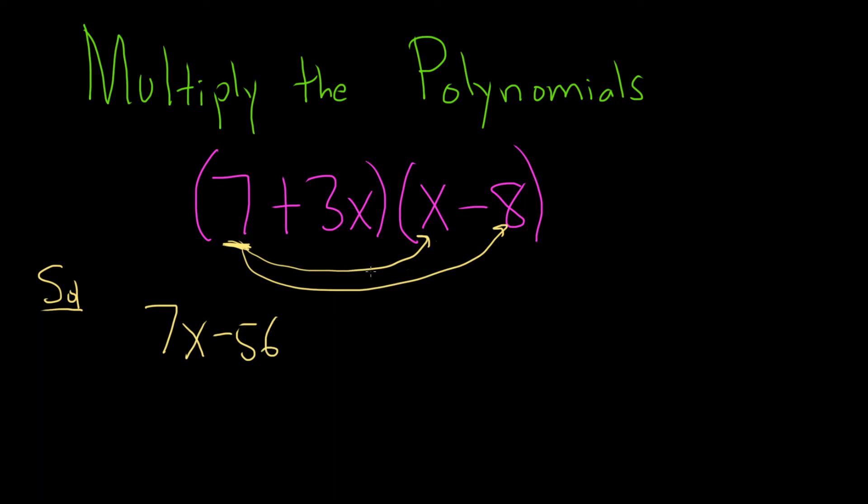Then you just go to the next one. So now you go to 3x. So 3x is here, and you do the same thing. You multiply it by all the ones over here on the right. So 3x times x is 3x squared. And then 3x times negative 8 is negative 24x.